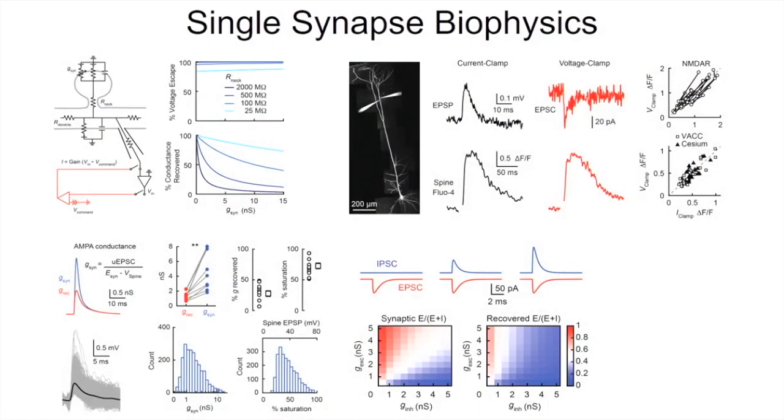That's a problem because frequently we want to make measurements about synaptic function in vivo and in vitro about things like excitation and inhibition balance, and the way that's commonly done is with voltage clamp circuitry. For any spiny synapse, that just absolutely doesn't work. In a model, here's what the synaptic conductances we put in are — a nice even distribution between E and I — but when you actually try to measure it under these conditions, you massively screw up that ratio. It's very hard to make that measurement.